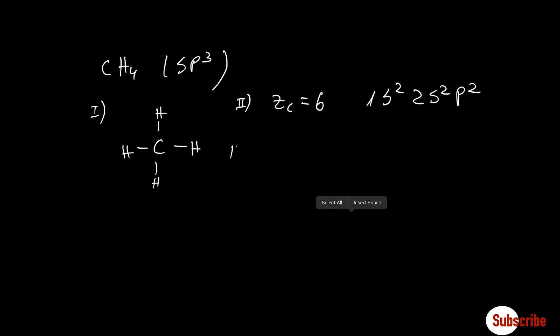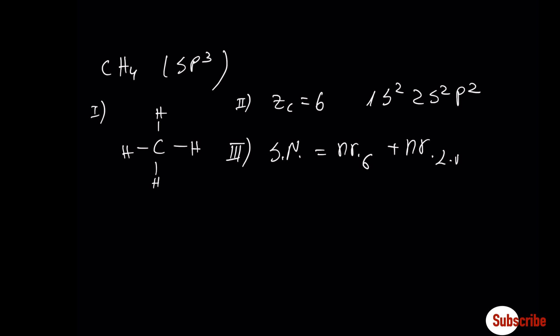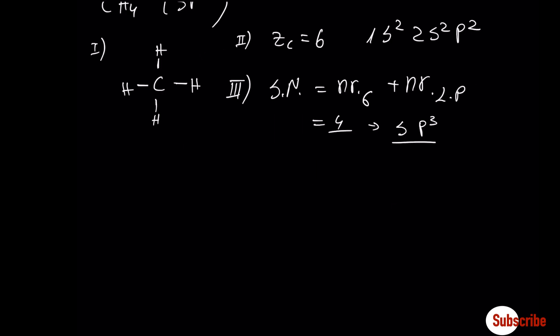Third step, we have to find the steric number, which is equal to the number of sigma bonds plus the number of lone pairs. In this case, we have only sigma bonds, no lone pairs present, so it is equal to 4, which means that we have 1s orbital and 3p orbitals included. Let's draw a diagram that explains this kind of hybridization.